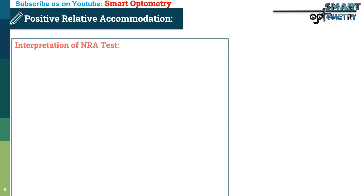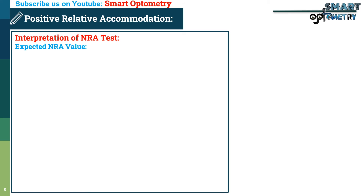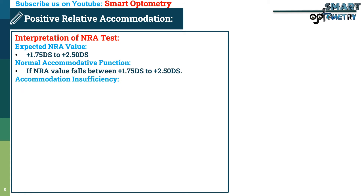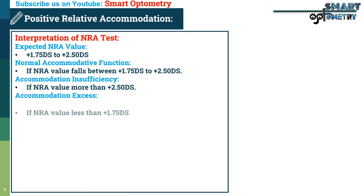Interpretation of the negative relative accommodation test: the expected NRA value is between plus 1.75 and plus 2.5 dioptres — indicating normal accommodative function. It will be accommodation insufficiency if NRA value is more than plus 2.5 dioptres. It will be accommodation excess if NRA value is less than plus 1.75 dioptres.